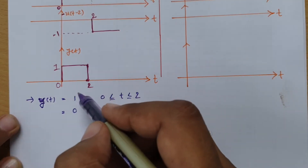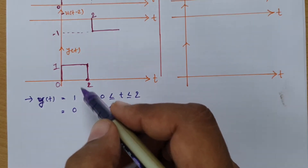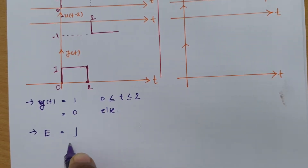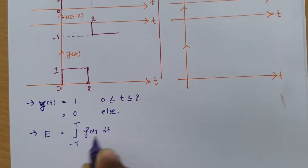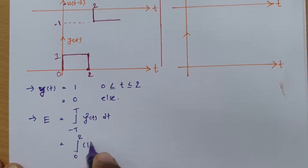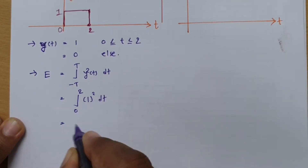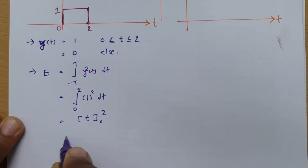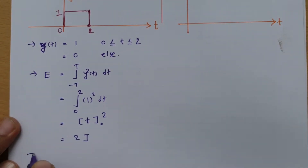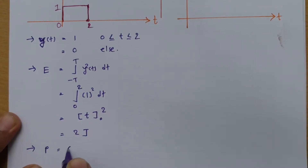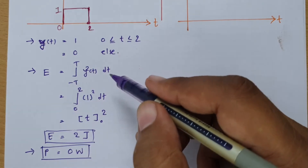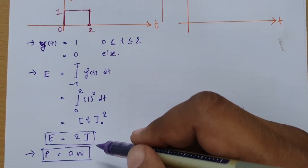This is a finite duration signal, so we can calculate its energy but not its power. For a continuous-time signal, energy is the integral of Y²(t) dt. The time range is 0 to 2, and Y(t) = 1, so the integral of 1² dt from 0 to 2 equals t evaluated from 0 to 2, giving energy = 2 joules. Since it has finite energy, power = 0 watts. This is an energy signal.